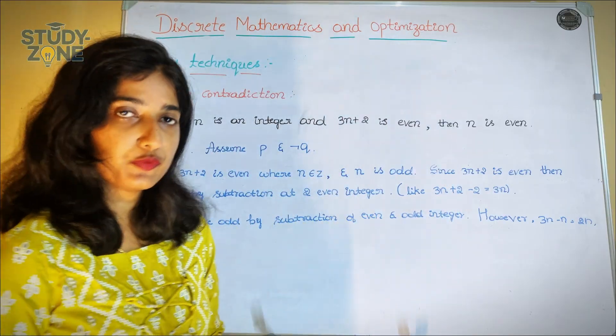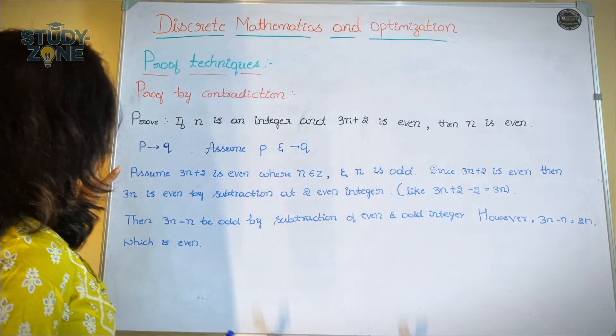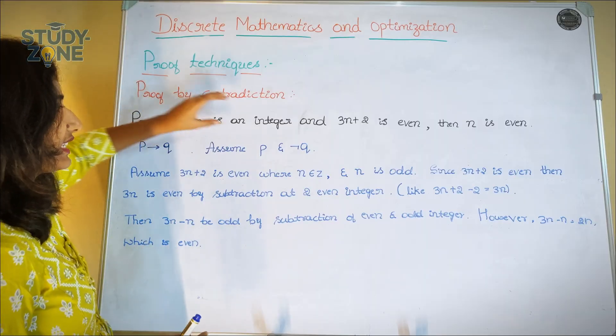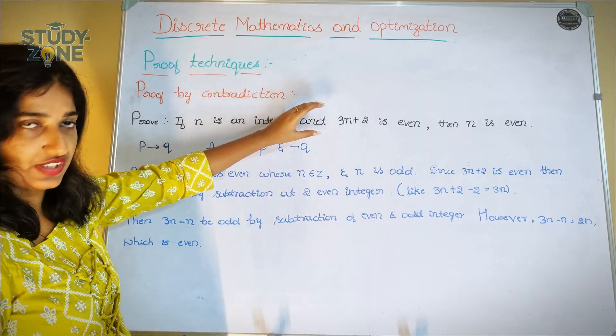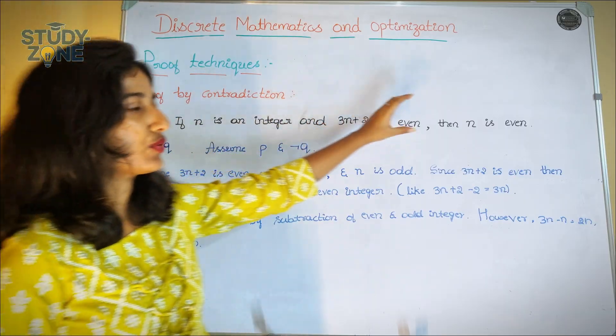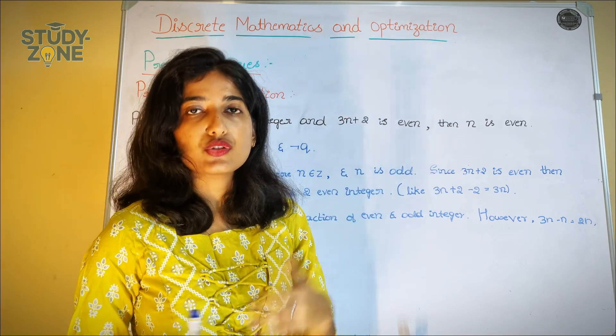In the proof by contradiction example, we have to prove: if n is an integer and 3n plus 2 is even, then n is even.